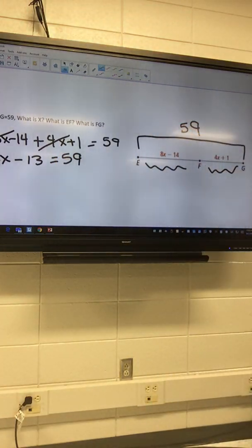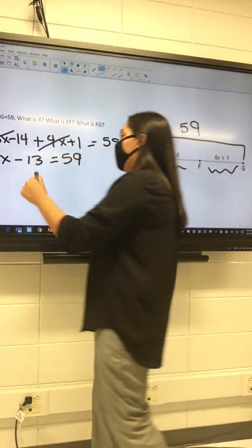Okay, what am I solving for? x. So I got 12x minus 13 equals 59. What do I need to do first? No, it's already minus 13, so plus 13.